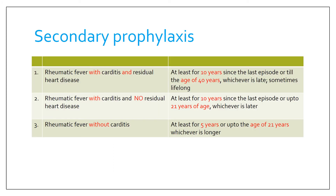Secondary prophylaxis is initiated against a subsequent attack of rheumatic fever because any further attack can increase the risk of rheumatic heart disease manifold. If the patient has rheumatic fever with carditis and residual heart disease, give prophylaxis for at least 10 years since the last episode, or up to age 40 years — or even beyond that.